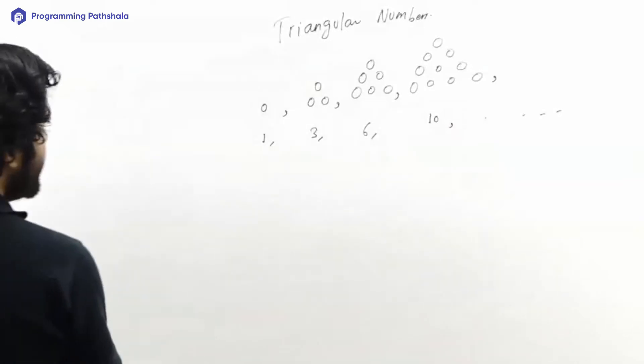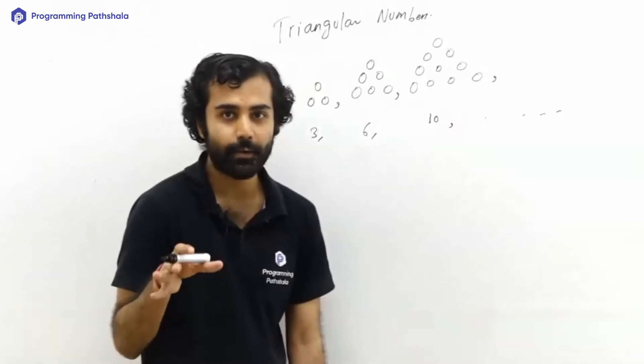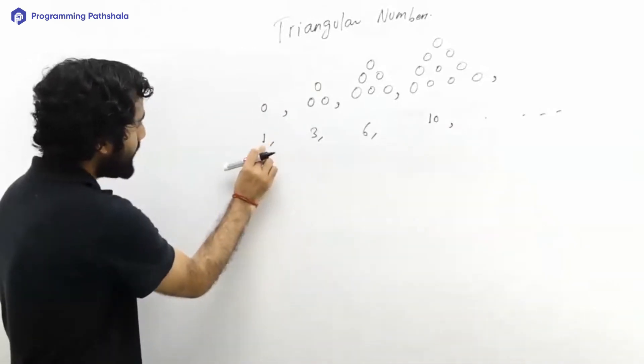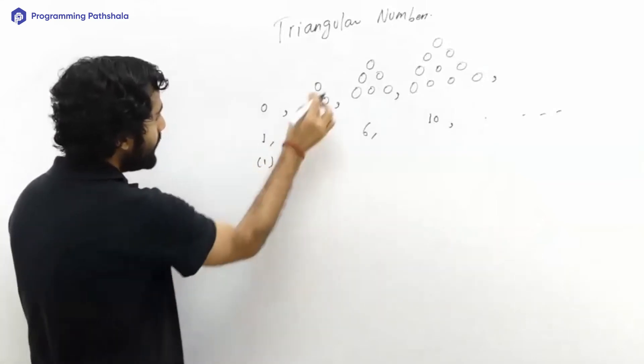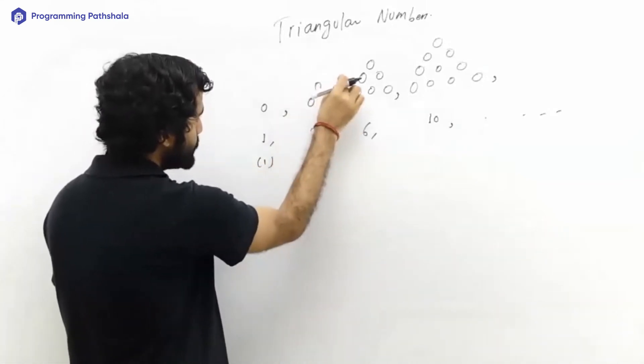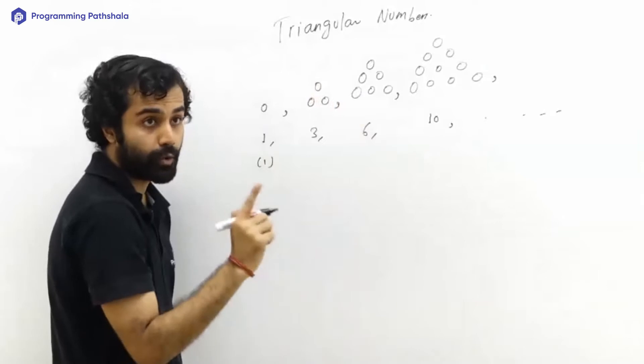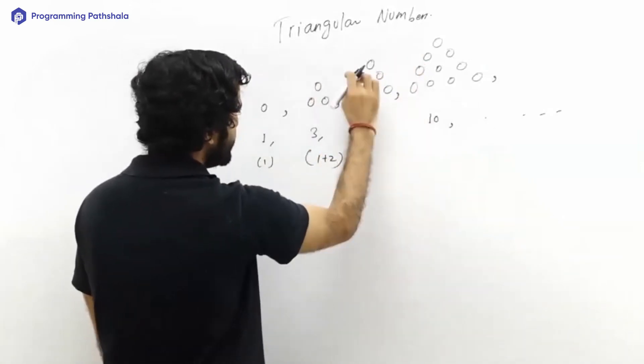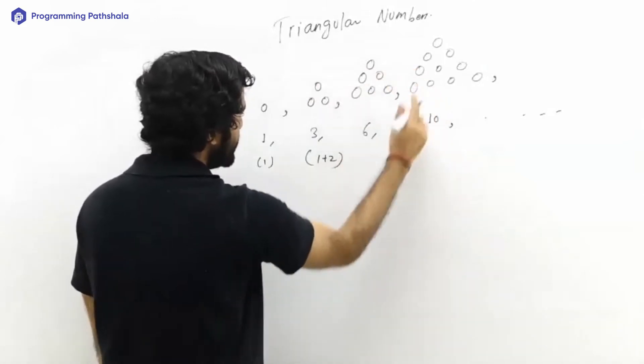Looks like that is correct. So let's try to understand. Here if I take a look, I have got one dot. In the first level there is one dot, in the second level there are two dots, so this three is one plus two. Here in the first level there is one dot, in the second level two dots, in the third level three dots.